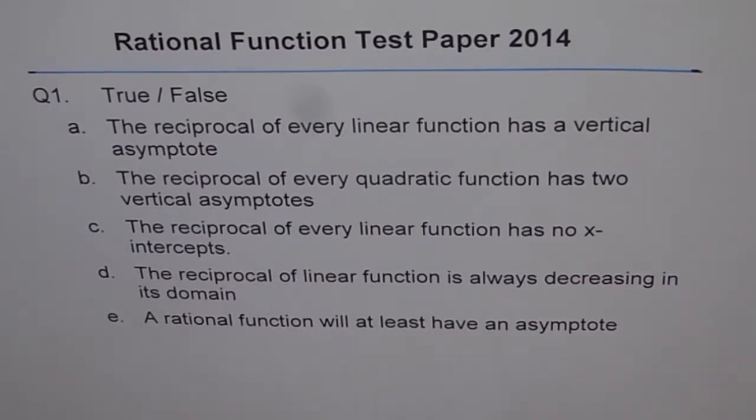E. A rational function will at least have an asymptote. It could be vertical, horizontal or oblique. So these are your five questions on true or false. Simple.